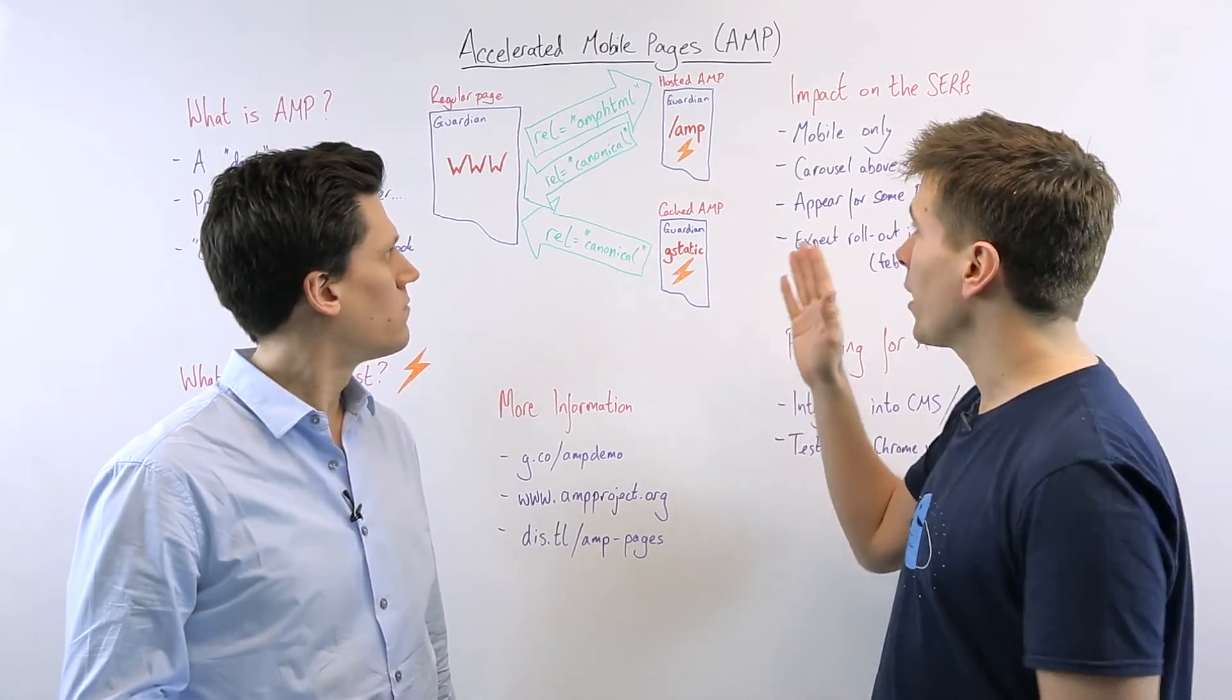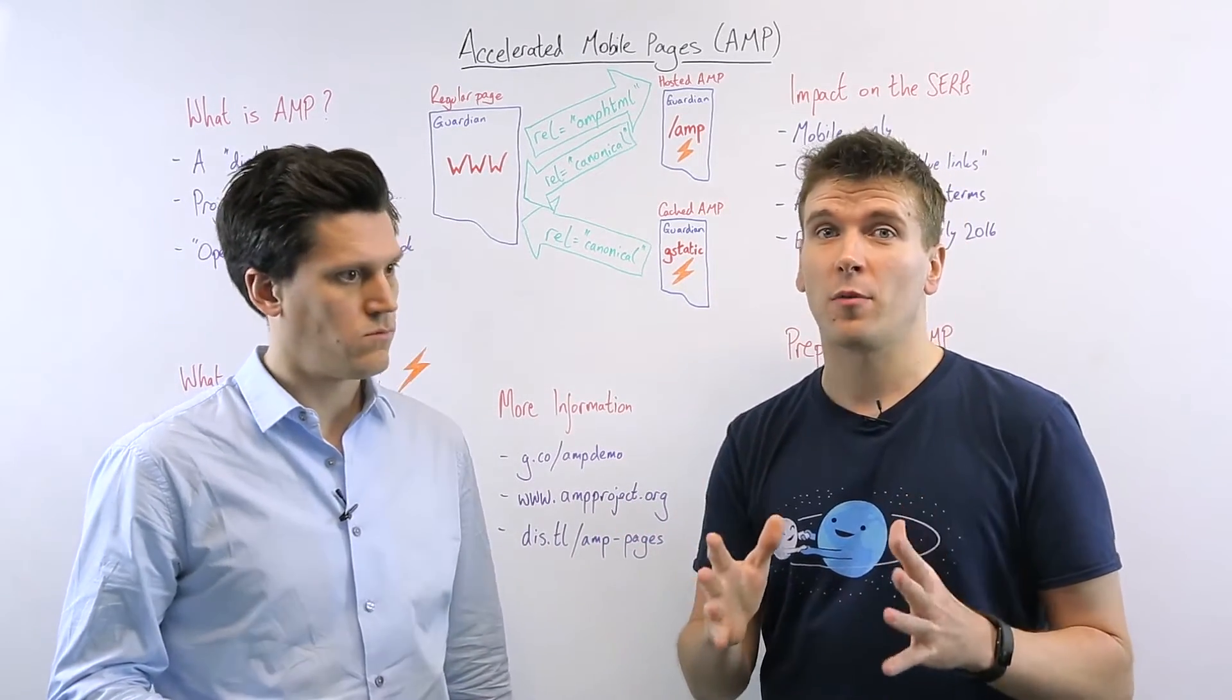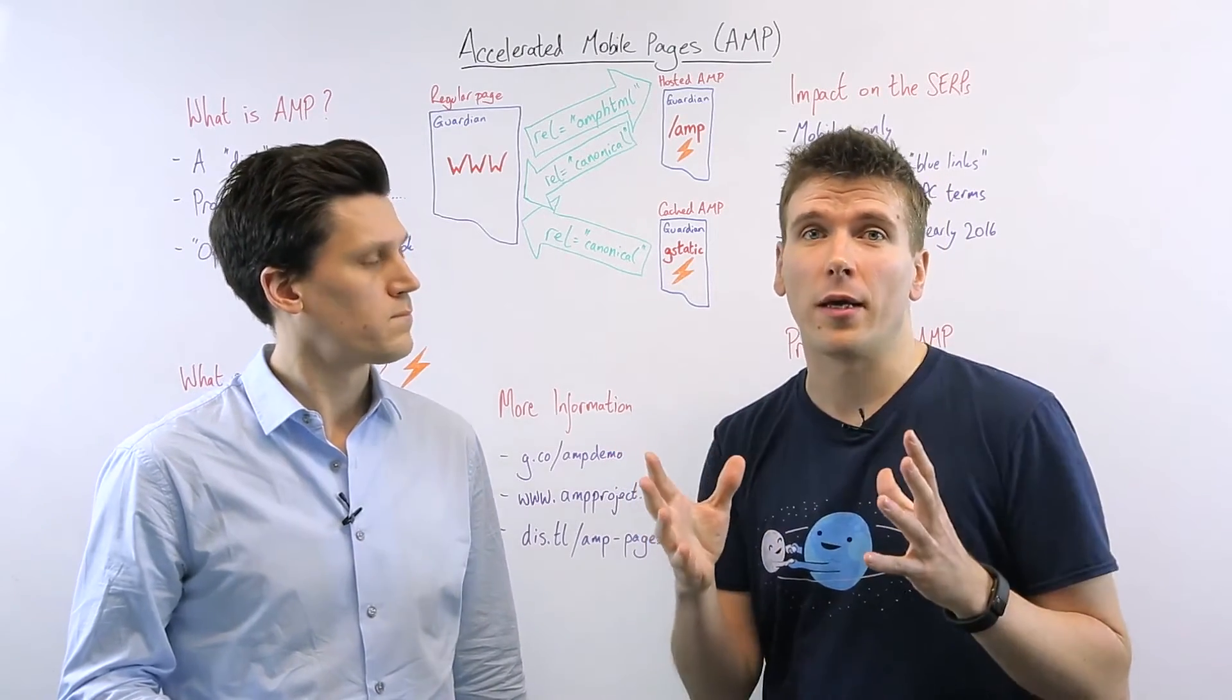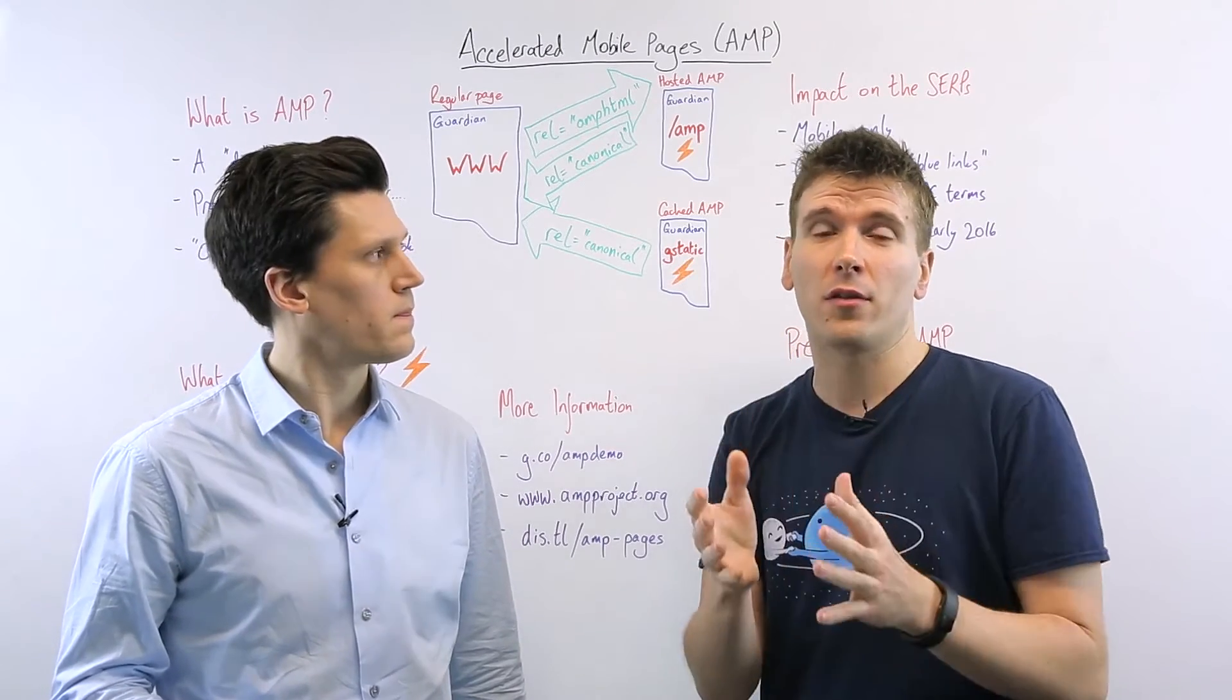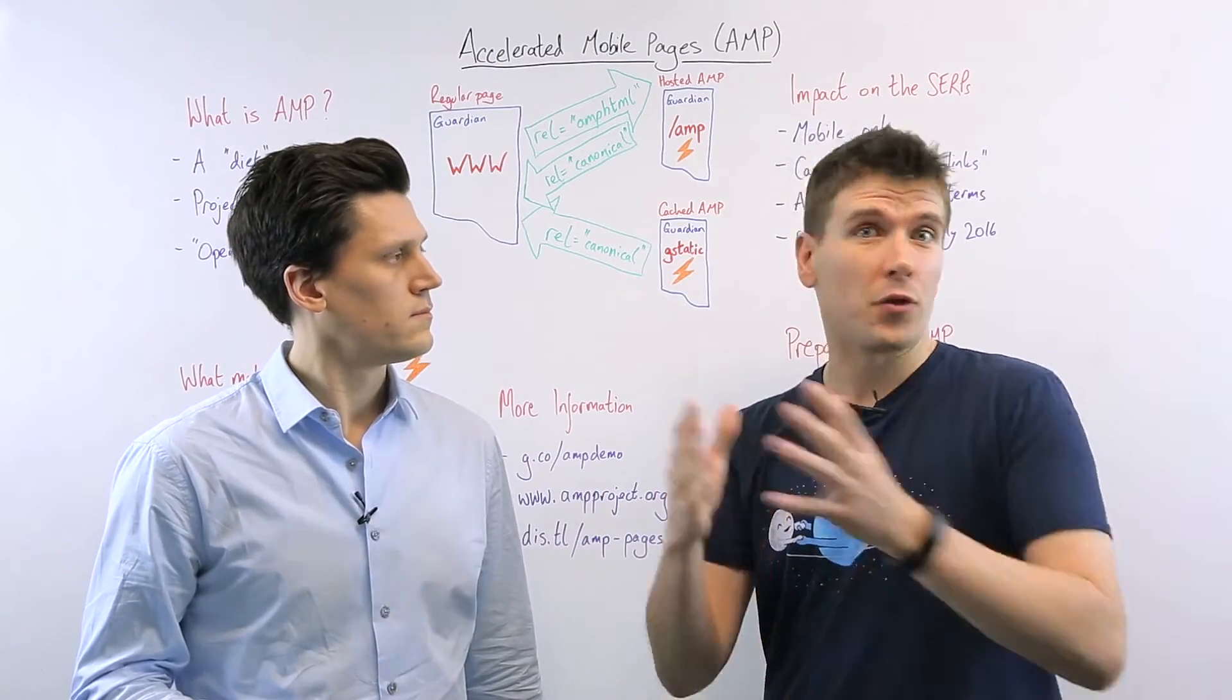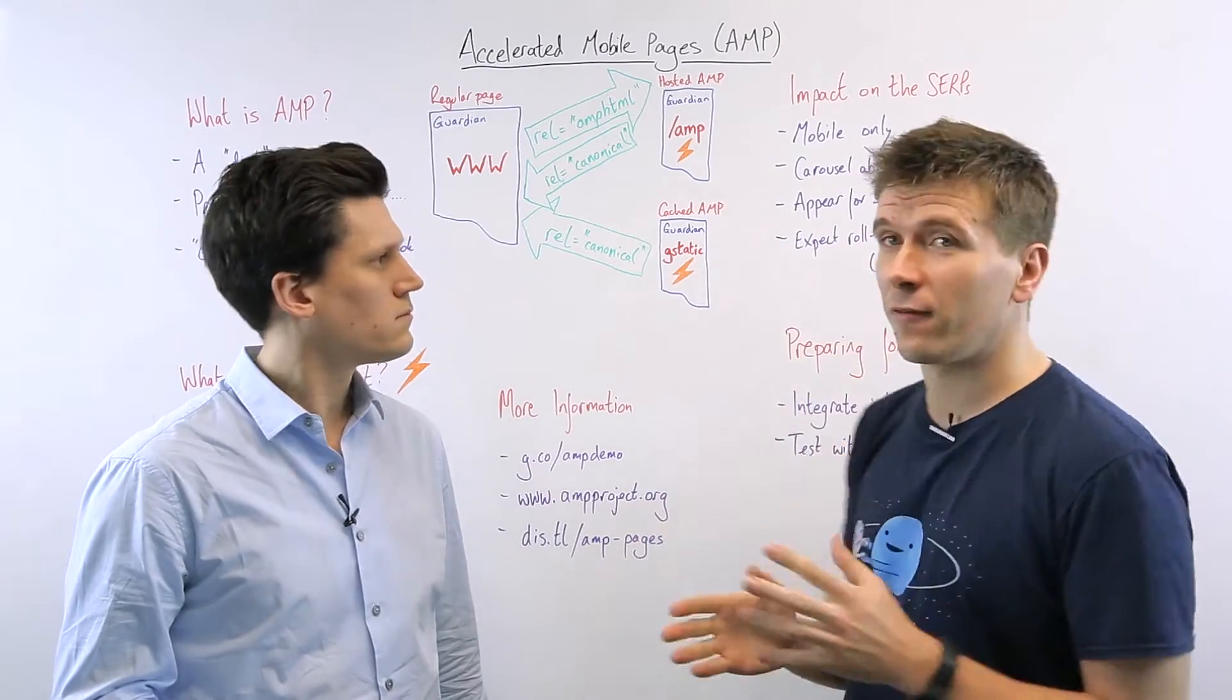I think it's worth saying that even on the cached version of the pages, Google have said you're still going to be able to provide your own adverts. And so they've basically built, we don't know the details of it yet, but they've built a platform where you can serve adverts from AdSense, Outbrain, most of the major advertising platforms, and you'll still accrue all the revenue, they don't take any of that stuff.